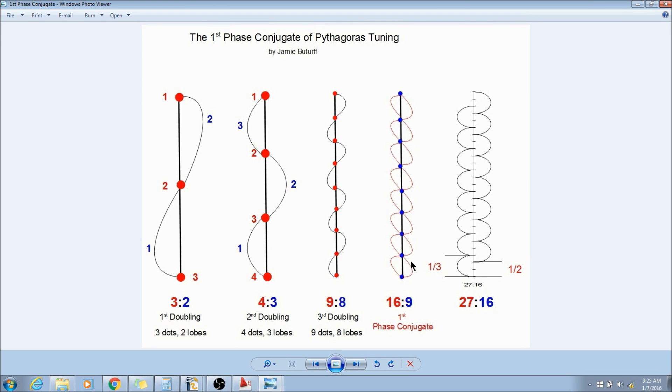When we come to the first phase conjugate, what we're doing is we're looking at a phase shift, a dimensional shift into a higher dimension, which is what music does. I think music depicts all the dimensions that exist in the universe.